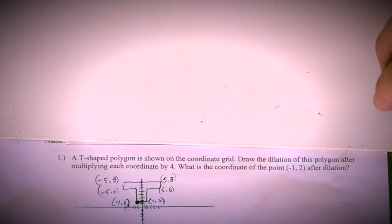Okay, for question number one, they're asking to dilate a T-shaped polygon as shown in this grid, and then draw the dilation after being multiplied by four. In other words, a dilation with a factor of four.